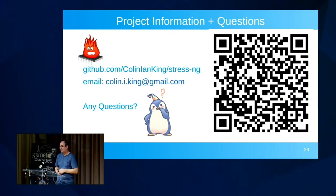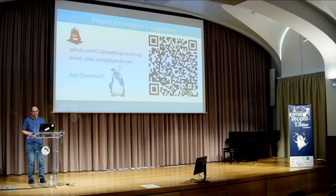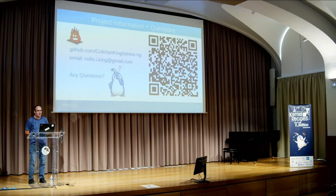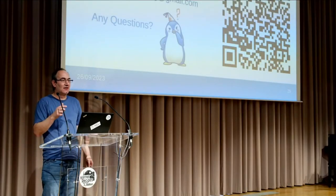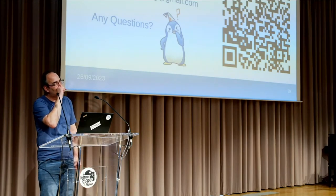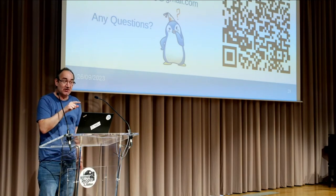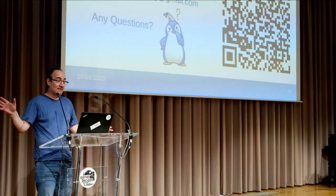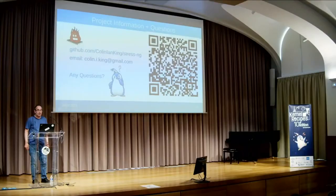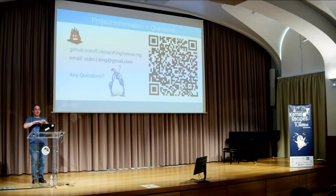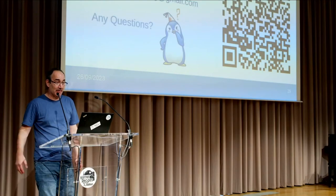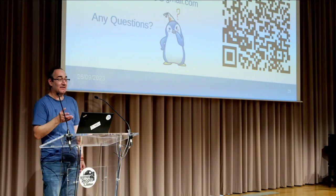Q: Do you have a random option? A: Yes — `--random N` picks N random stressors out of the 310 available and runs them. You can specify how many you want, like eight. You can run it for a set time and then invoke it again for a different random mix, rather than running forever.